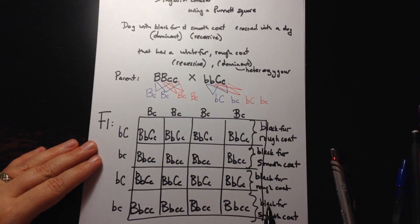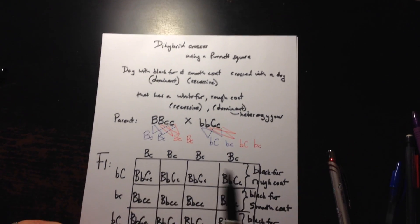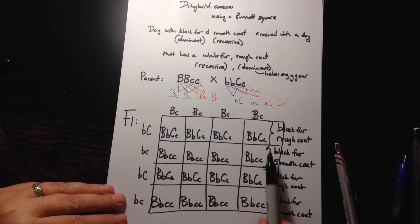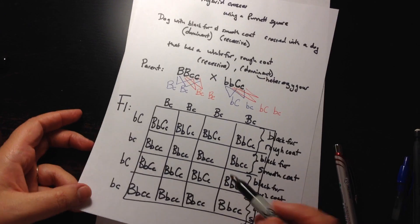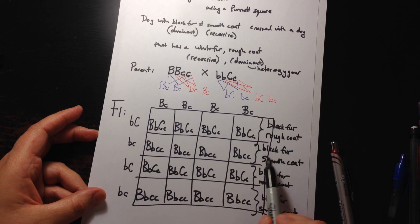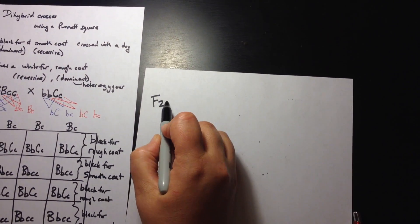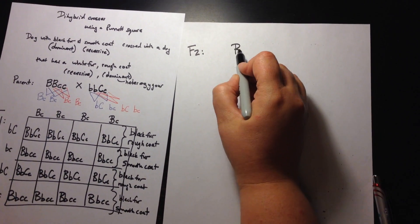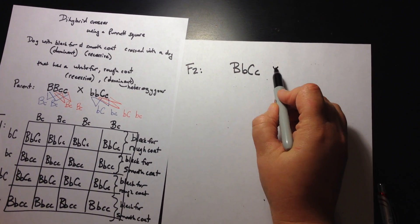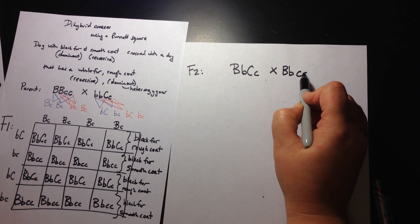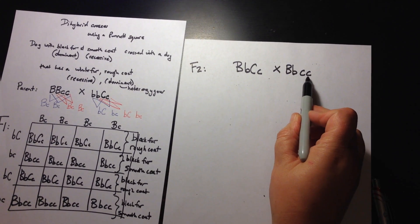We have shown the phenotypes in the F1 generation. But we can go one step further and do an F1 cross. We only have two different kinds here, so let's take one black fur rough coat and cross it with a black fur smooth coat in the F2 generation. We take black fur rough coat, which is heterozygous, and cross it with black fur smooth coat — heterozygous for black fur but homozygous recessive for coat texture.